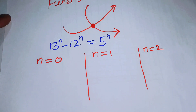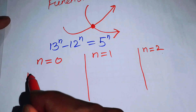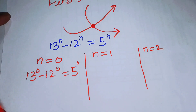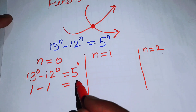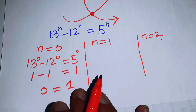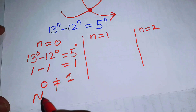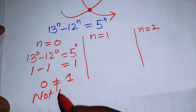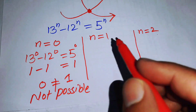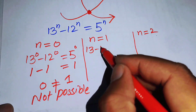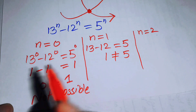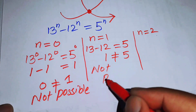When n = 0: 13⁰ - 12⁰ = 5⁰ gives 1 - 1 = 1, which is 0 = 1 — not possible, so we reject this case. When n = 1: 13 - 12 = 5 gives 1 = 5 — again not possible.